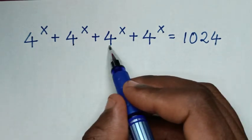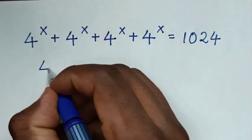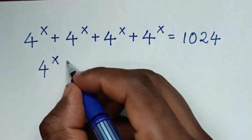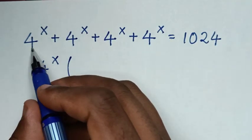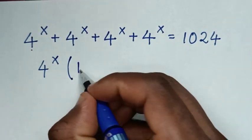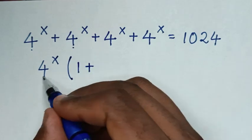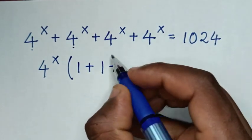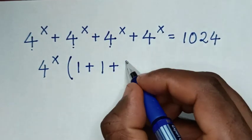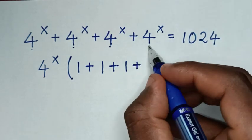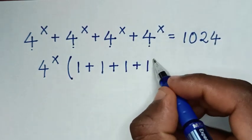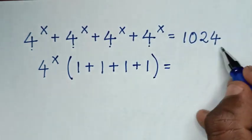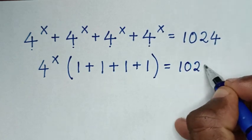From here, 4^x is common, so we will take 4^x out of the bracket. Then when we divide each term 4^x by 4^x, we get 1 plus 1 plus 1, and the bracket equals 1024.